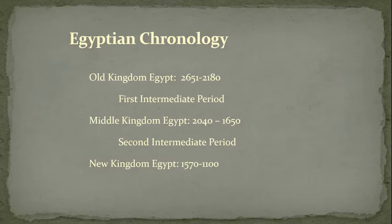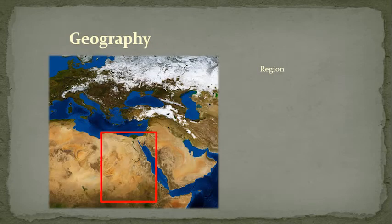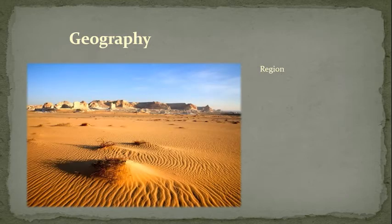We're going to begin the way we always introduce a new place — with geography. Where are we on the globe? When we're talking about Egypt, we're talking about Northeast Africa. It's part of this Fertile Crescent region that we've talked about, and it occupies pretty much where the modern state of Egypt occupies. Egypt is hot and dry — it's in the middle of the Sahara Desert, one of the driest areas in the entire world.